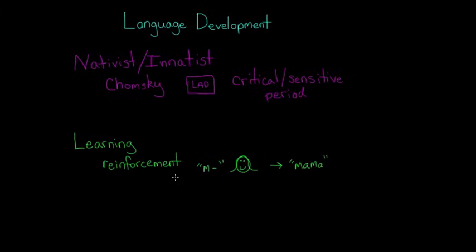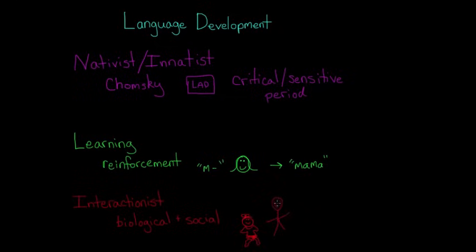So we have another theory called the interactionist approach. Sometimes this is called the social interactionist approach because these theorists believe that biological and social factors have to interact in order for children to learn language. So they would say that children strongly desire to communicate with others, such as the adults in their lives. And that desire motivates them to learn to communicate via language.